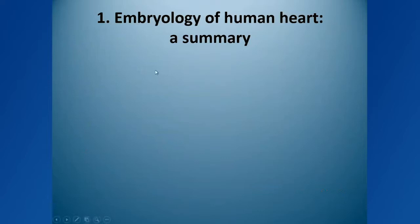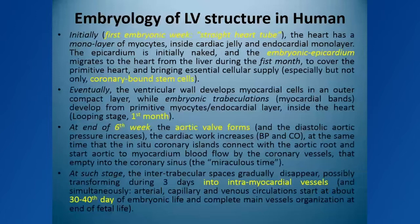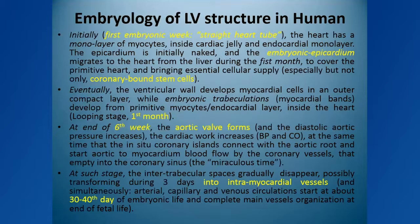Now let's go to embryology — how does non-compaction or high trabeculation appear in the human embryo? In the first week of development, we recognize the heart as a straight tube, where the layers are basically three: an outside clean surface with no epicardium, then a single-cell layer of myocardial cells, then jelly, then an endocardial layer inside. This continues for the first week or two, and eventually the epicardium — also called the epicardial organ — a layer of cells that come from the liver, travels from the back of the heart to cover the whole extension of the heart.